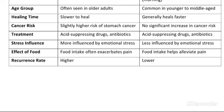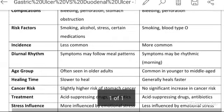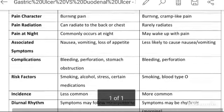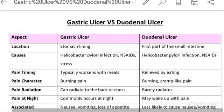Next, last difference hai reoccurrence rate — ki dubara hota hai ya nahi, chances kitne hain. Gastric ulcer ka higher reoccurrence rate hota hai, aur duodenal ulcer ka jo reoccurrence rate hai woh kam hota hai. Toh this is the difference between gastric ulcer and duodenal ulcer. Aaj ki video mein itna hai — thank you so much.